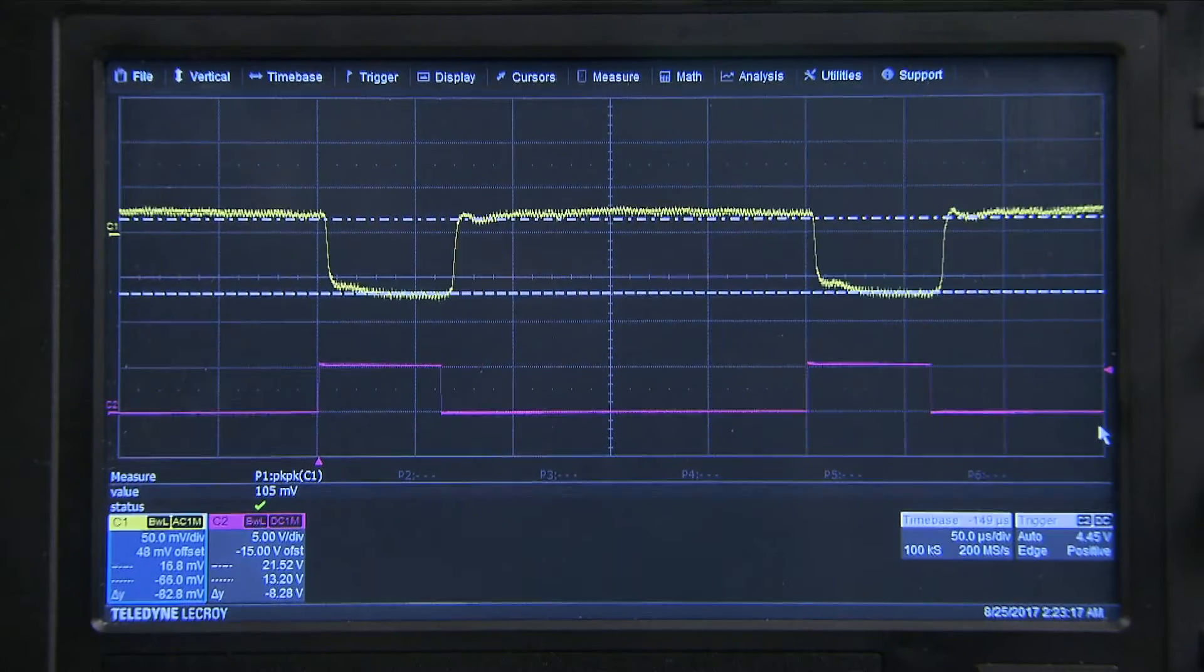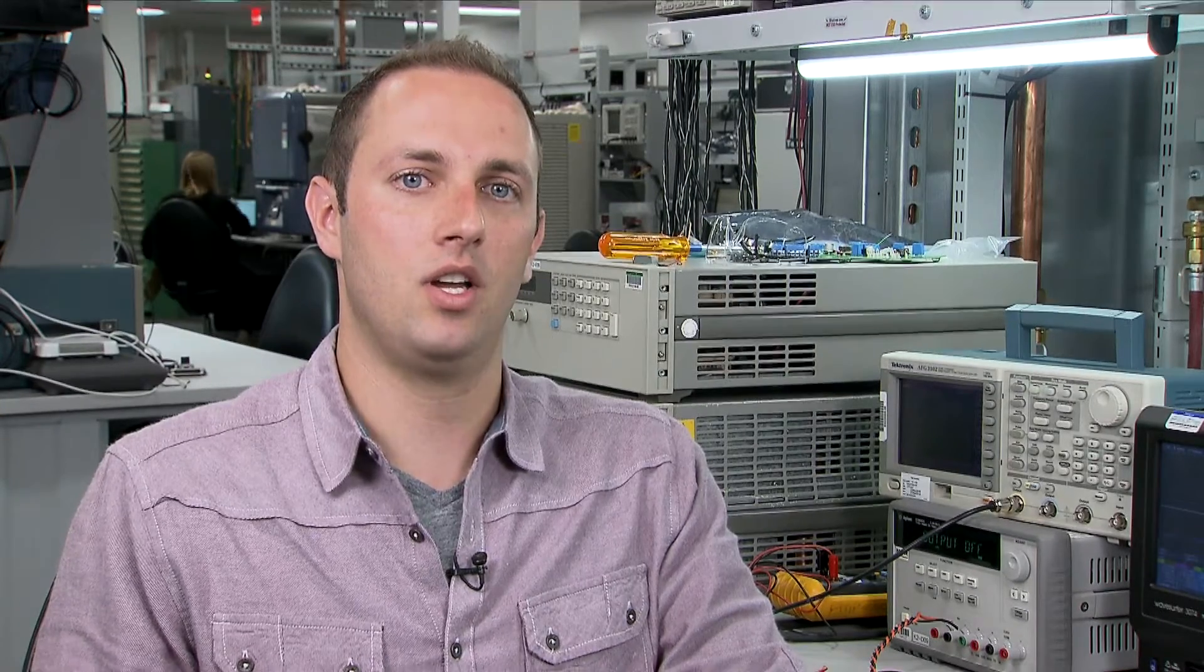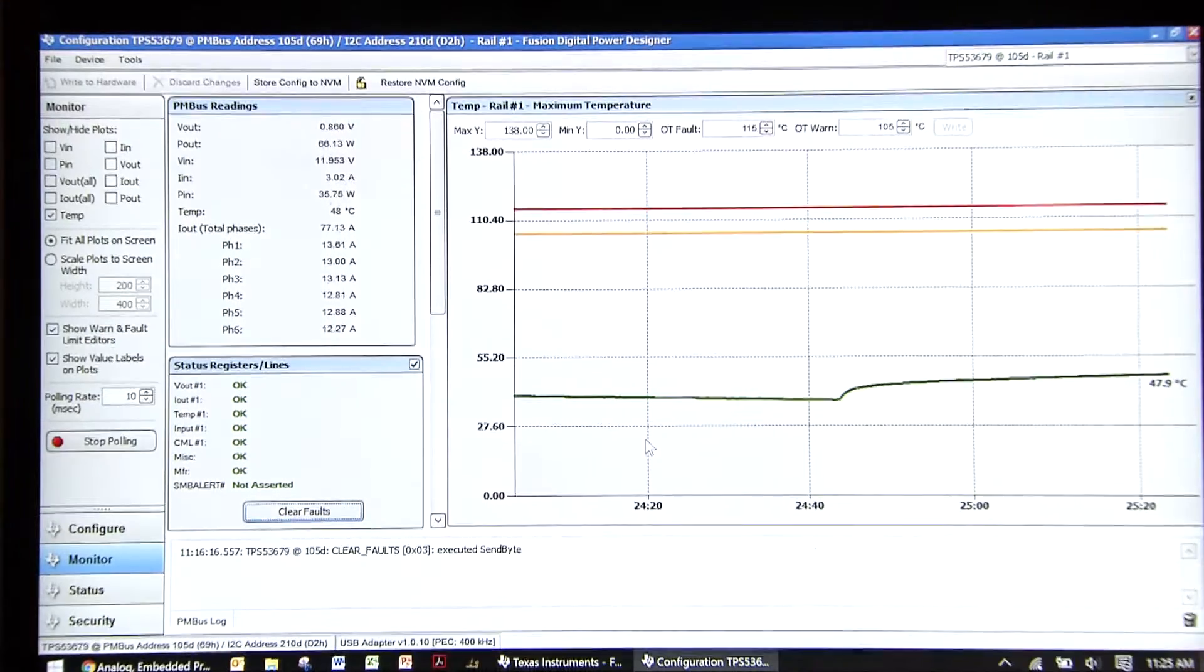Finally, let's take a look at the thermal performance of the board. We can easily monitor the hottest power stage temperature using TI's Fusion GUI and the PMBus telemetry features of the TPS 53679 controller. The thermal reading reported by the controller is the highest hottest temperature measured, not the average temperature.